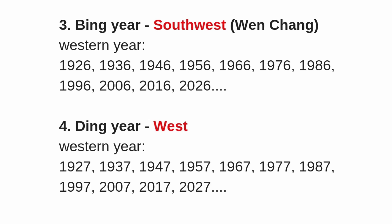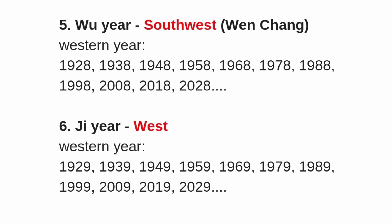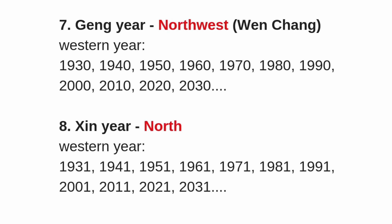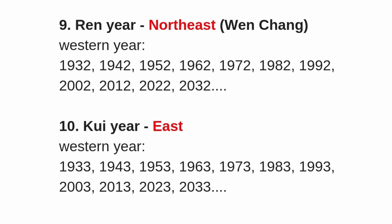The third heavenly stem is the Bing year, and the Wenchang location is in the southwest. The fourth is the Ding year, and Wenchang is also in the southwest. The fifth heavenly stem is the Wu year, and Wenchang is in the southwest. The sixth is the Ji year, and Wenchang is in the north. The seventh is the Geng year, and Wenchang is in the northwest. The eighth is the Xin year, and Wenchang is in the north. The ninth is the Ren year, and Wenchang is in the northeast. And the last is the Gui year, and Wenchang is in the east.